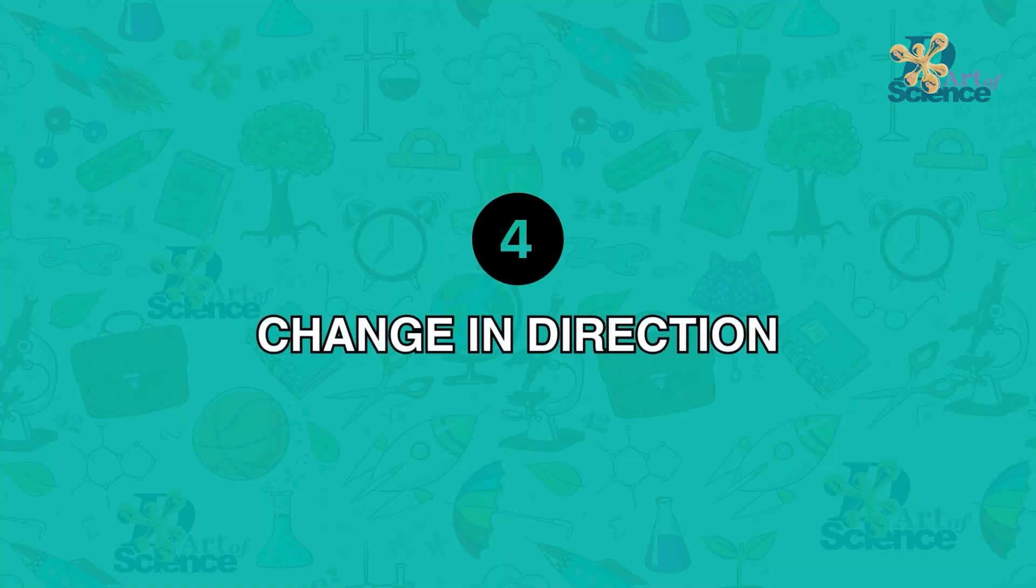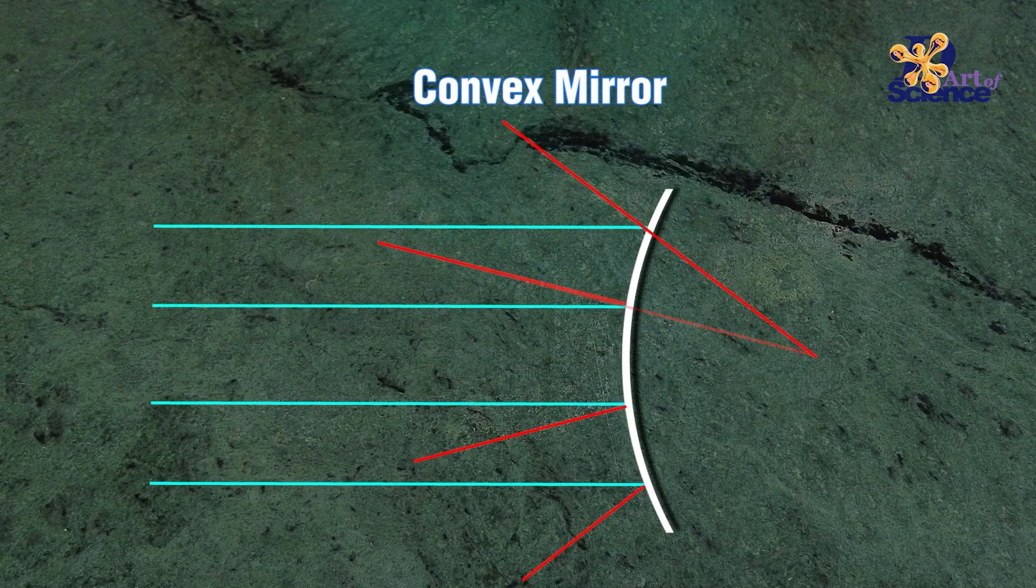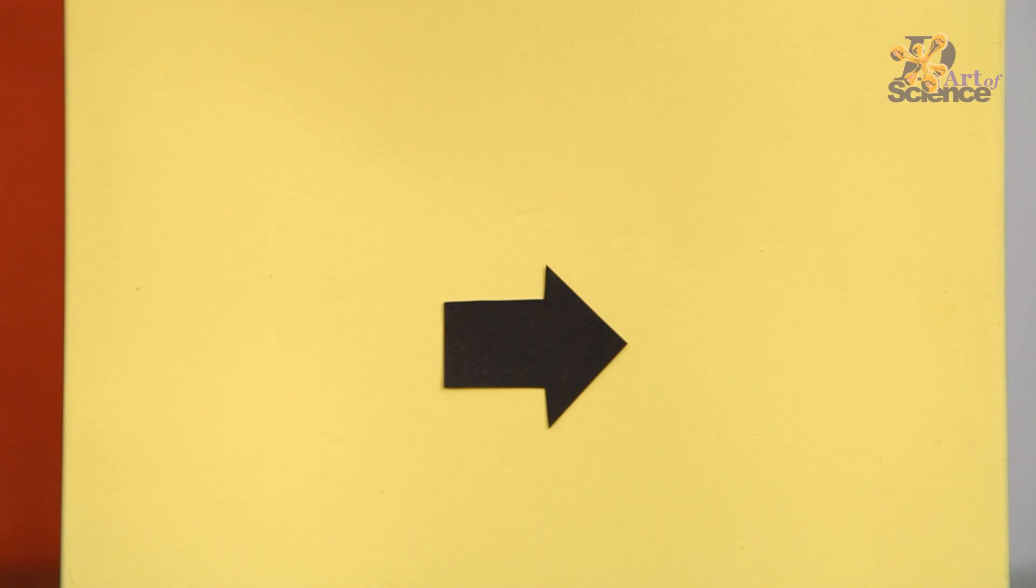Difference number four is direction change. In both cases, light changes direction. In reflection, light reflects and comes backward. But in refraction, light moves forward with a slight change in direction.